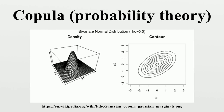The copula C contains all information on the dependence structure between the components, whereas the marginal cumulative distribution functions contain all information on the marginal distributions. The reverse of these steps can be used to generate pseudo-random samples from general classes of multivariate probability distributions. Given a procedure to generate a sample from the copula distribution, the required sample can be constructed using the inverse CDFs, which are unproblematic as they were assumed to be continuous.